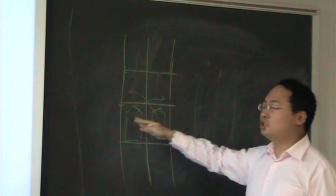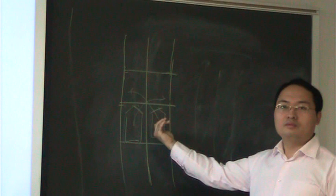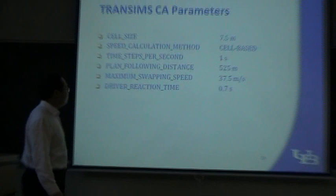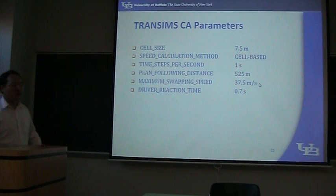The left vehicle cannot change right and the right vehicle cannot change left. In this situation, the system called 'transients' will try to resolve the deadlock by swapping them. When transients perform this swapping, the vehicles must be within a certain speed range — the maximum swapping speed, which is equal to 5 cells per hour.